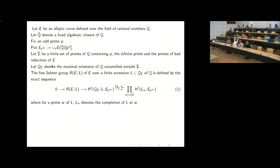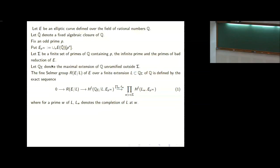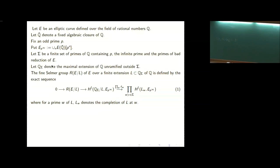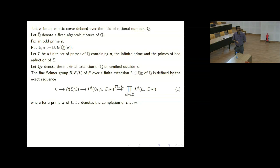Sigma contains P inside, infinity inside, and primes dividing the conductor N_E of the elliptic curve. This will be fixed throughout the talk. We consider the extension Q_sigma of Q, which is the maximal extension of Q unramified outside sigma. This is a Galois extension over Q, and then we have the fine Selmer group, which is defined by an exact sequence — the fine Selmer group that appeared in the title.